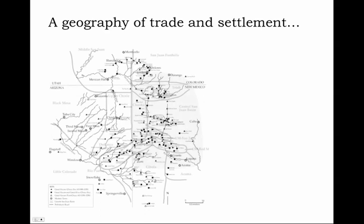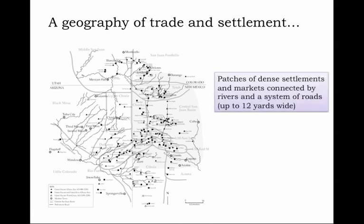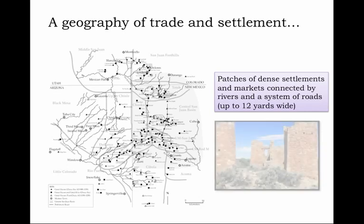A modern map shows the Four Corners region — Utah, Colorado, New Mexico, and Arizona — with modern towns such as Durango, Colorado, and Farmington, Utah. Also noted are the trading posts and town settlements of the Pueblo peoples spreading across the region, along with the network of roads that made up the actual trade connections. Patches of dense settlements and markets were connected by rivers and a system of roads — sometimes constructed roads up to 12 yards wide — crisscrossing the large area of trade, settlement, and exchange created by the Pueblo peoples.